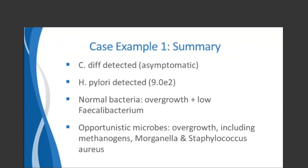As a summary of GI MAP findings: C. diff was detected but this patient was basically asymptomatic for classic C. diff symptoms. H. pylori was detected just below the cutoff, possibly playing a minor to moderate role in lowering stomach acid. In the normal bacteria section, there is overgrowth plus a low Faecalibacterium. In terms of opportunistic microbes, a general overgrowth pattern including methanogens, Morganella, and Staph aureus, which are often among the most clinically relevant.